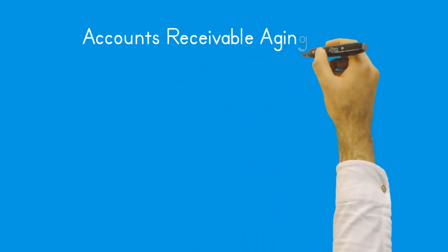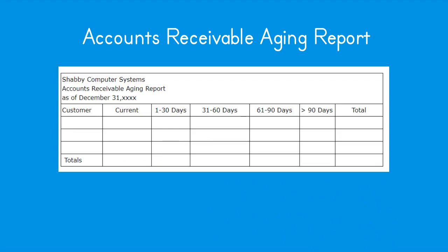Accounts receivable aging report. Since we grant payment terms to customers, we need a way to track whether they are paying on time. Our accounts receivable subsidiary ledger provides the information needed to prepare an AR aging report, also known as an AR report or aging AR report. It is used to keep track of what payments are due from customers — what payments are owed, when they are due, and from which customer. An AR aging report typically lists customers alphabetically or by size of debt, with invoice amounts in 30-day columns going across to 90 days plus. With a manual bookkeeping system, preparing an aging report becomes tedious and time-consuming.